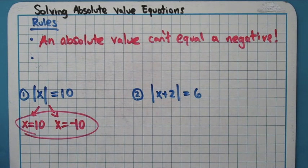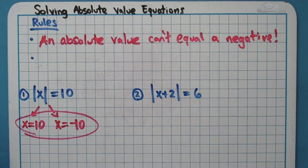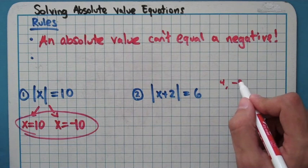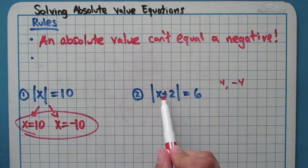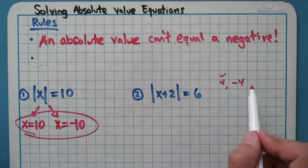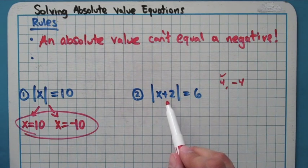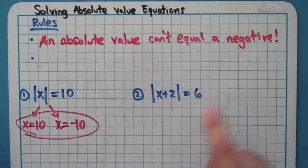On the second problem, I want to use the same logic to arrive at our answer. A common mistake is when students see |x+2| = 6 and think x+2 equals 6, so the answer is 4, and then just assume the other answer is negative 4. If you plug in 4, we're totally fine — 4 plus 2 is 6, and the absolute value of 6 is 6. But if you plug in negative 4, negative 4 plus 2 is negative 2, and the absolute value of negative 2 is 2, which didn't work. You can't just make the first answer negative to get the second answer.